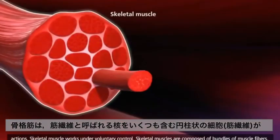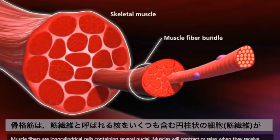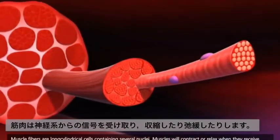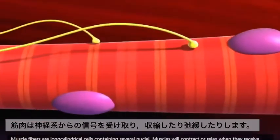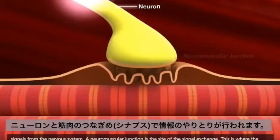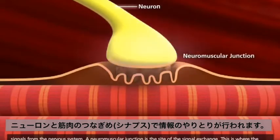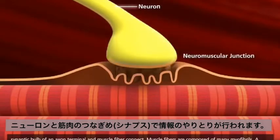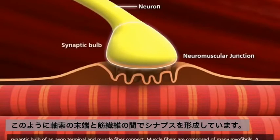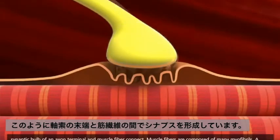Skeletal muscles are composed of bundles of muscle fibers. Muscle fibers are long cylindrical cells containing several nuclei. Muscles will contract or relax when they receive signals from the nervous system. A neuromuscular junction is the site of the signal exchange — this is where the synaptic bulb of an axon terminal and muscle fiber connect.